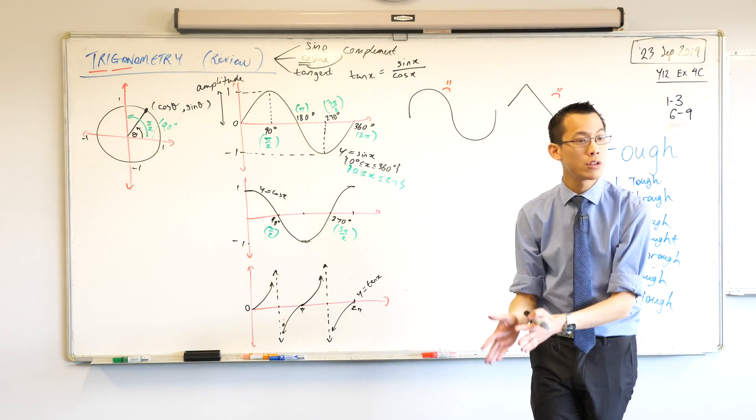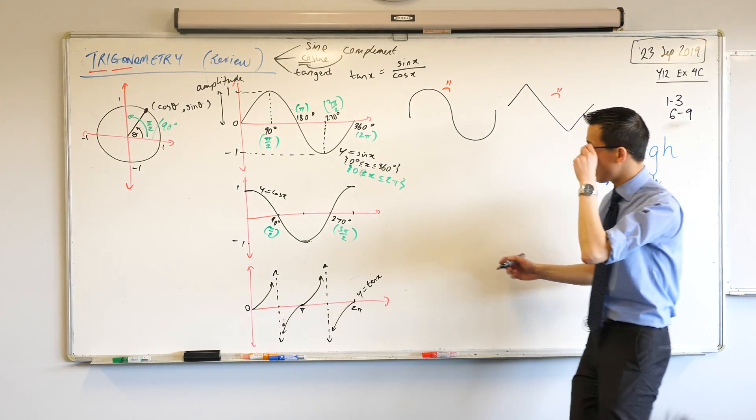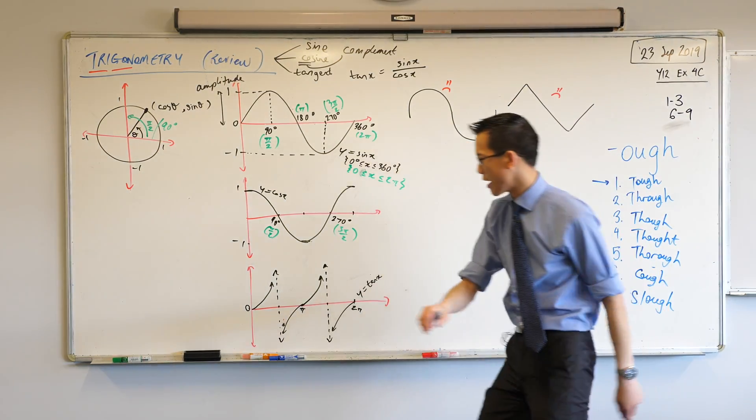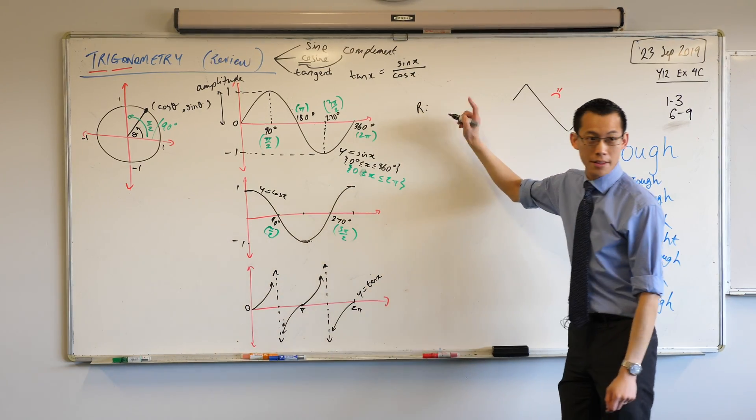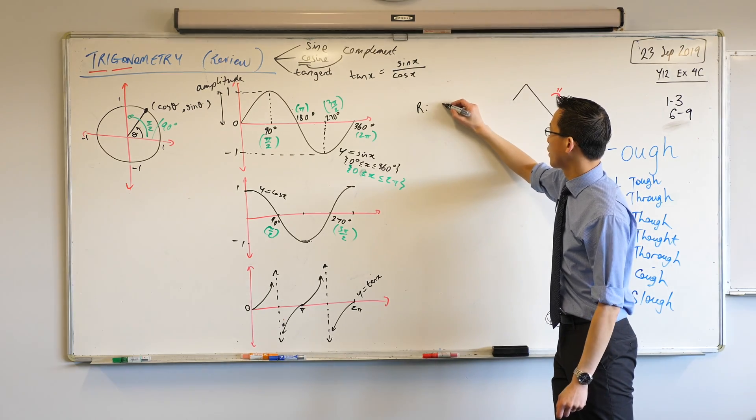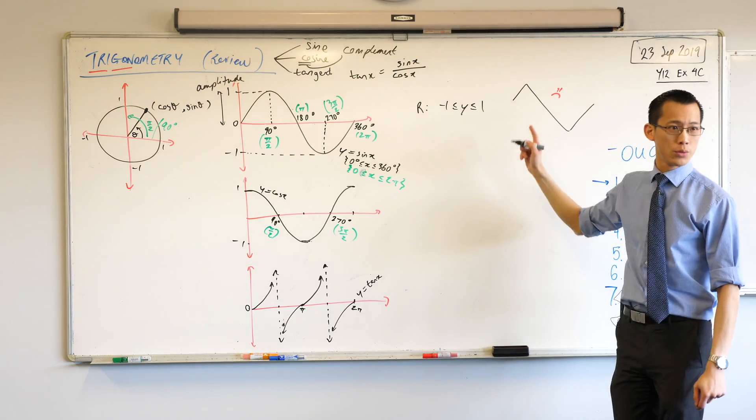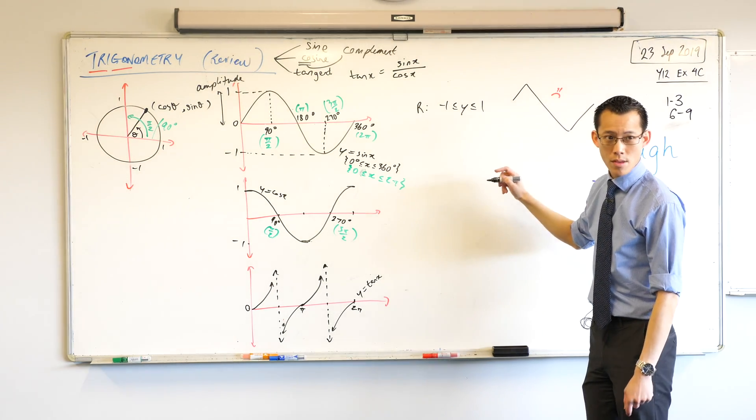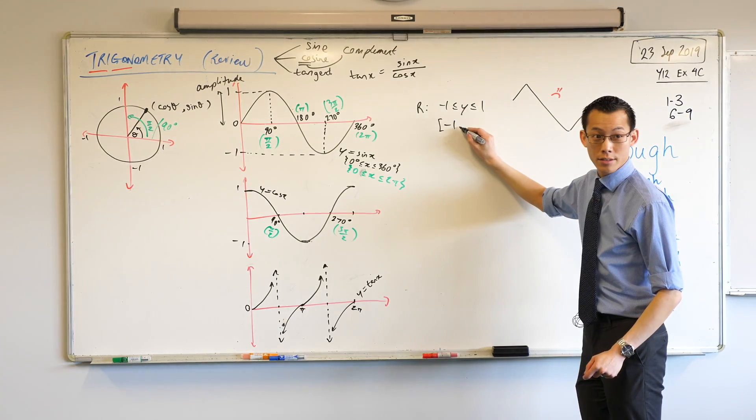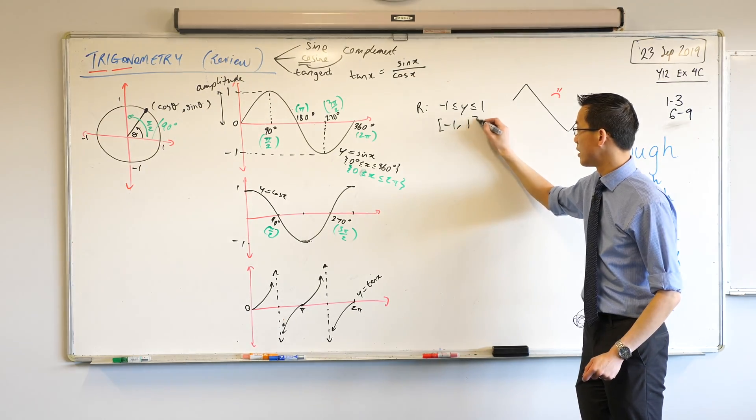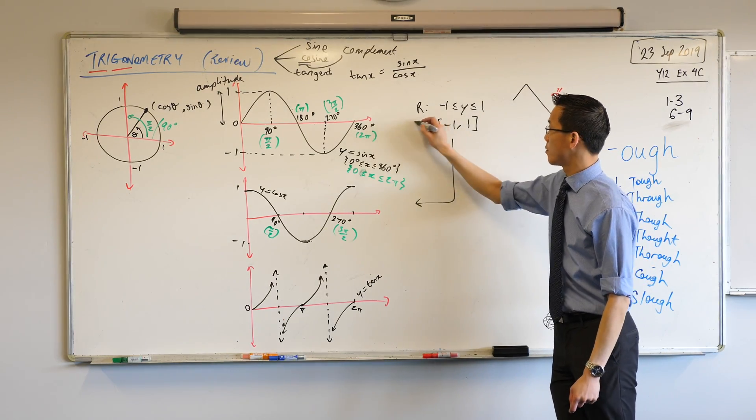Yeah, we can write this in two ways. We can write it in interval notation or we can write it with set notation. So our range here, this one we would write it as negative one to one. What's the way we would do this with interval notation? Negative one, square bracket on the left, comma, positive one, and then another square bracket. Same thing for this.